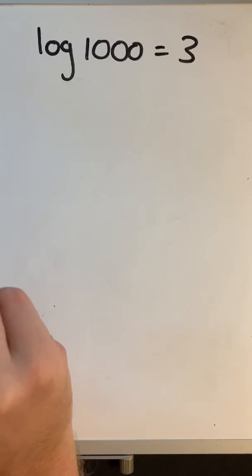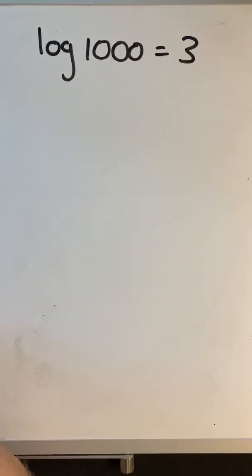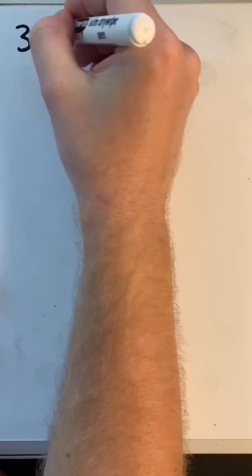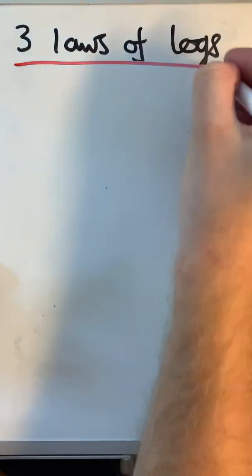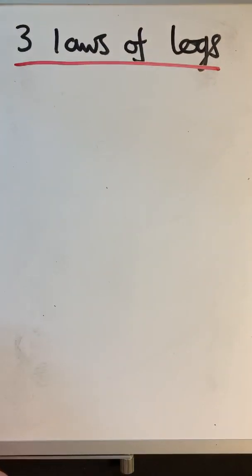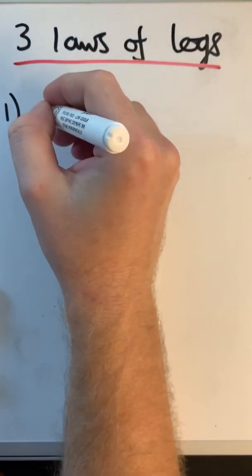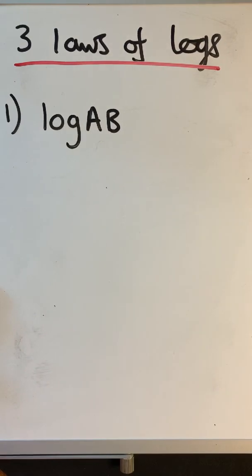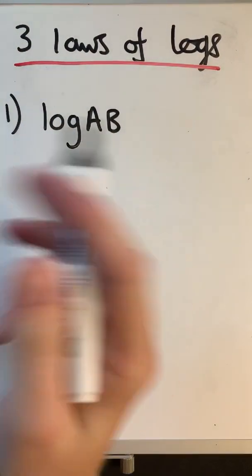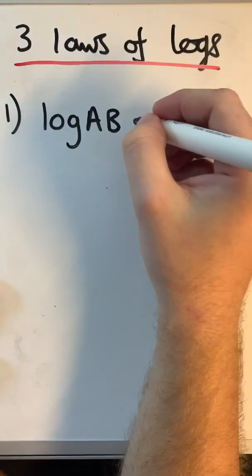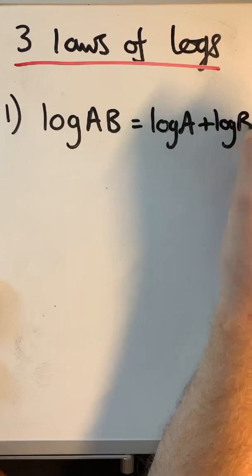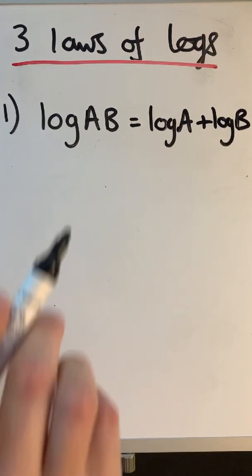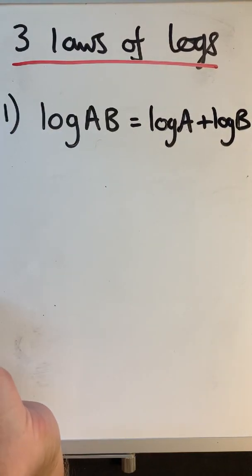An important topic for solving indicial and logarithmic equations is the three laws of logarithms. The first law of logs: if you have log of a times b, where a and b can be two terms — numbers, x's, brackets — then log(ab) equals log a plus log b.